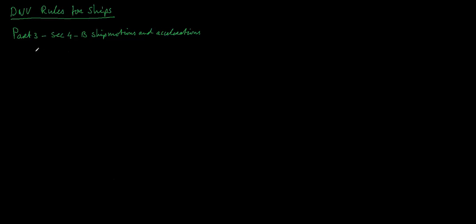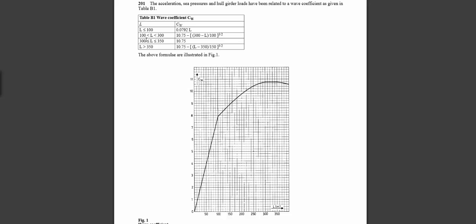Say we have a vessel with a length of 128 meters. From the graph we learn that when the length is between 100 and 300 meters we use this formula, or you just go into the graph. Say 128...